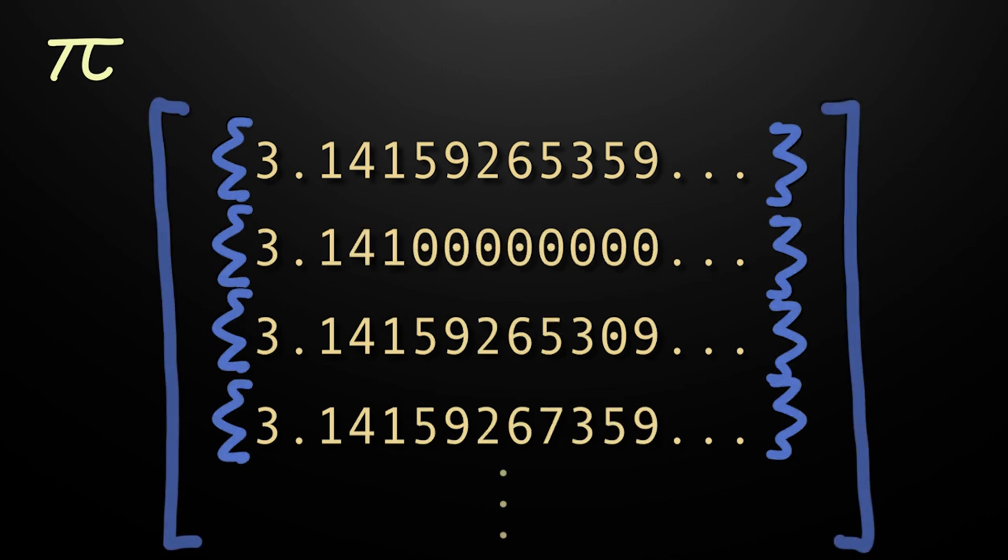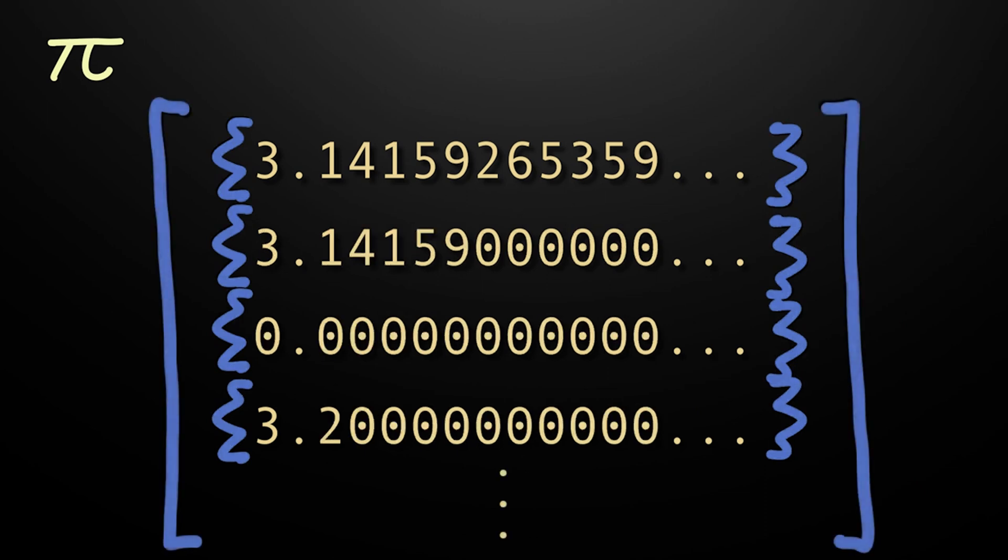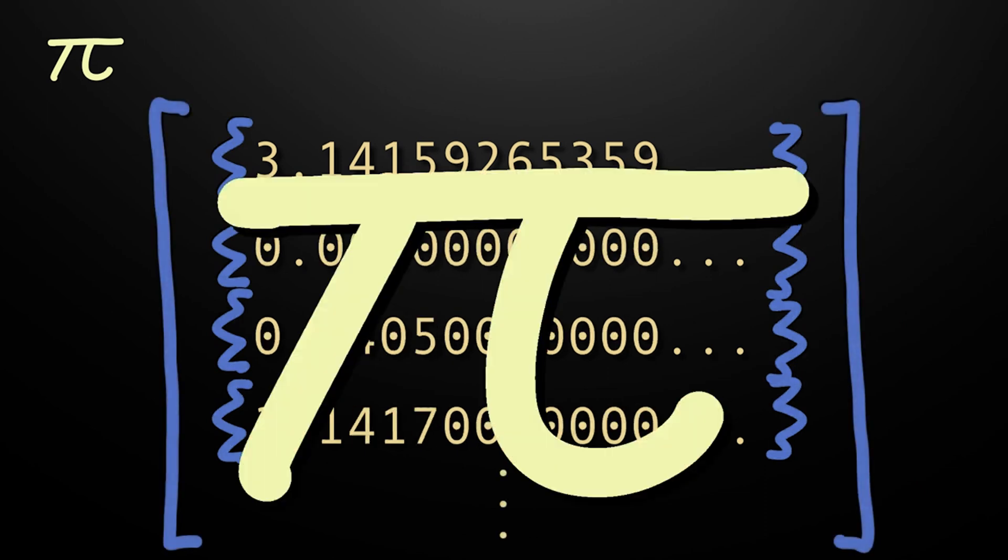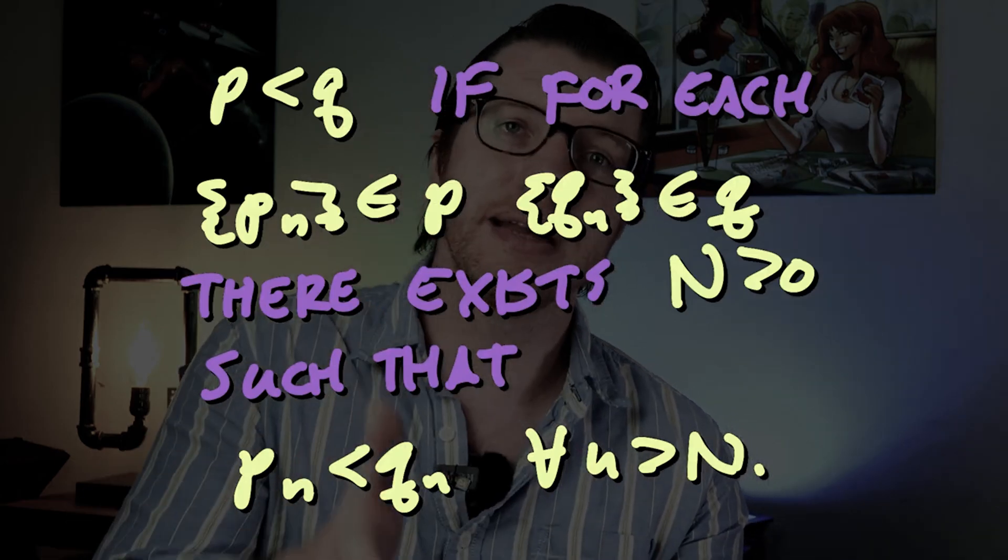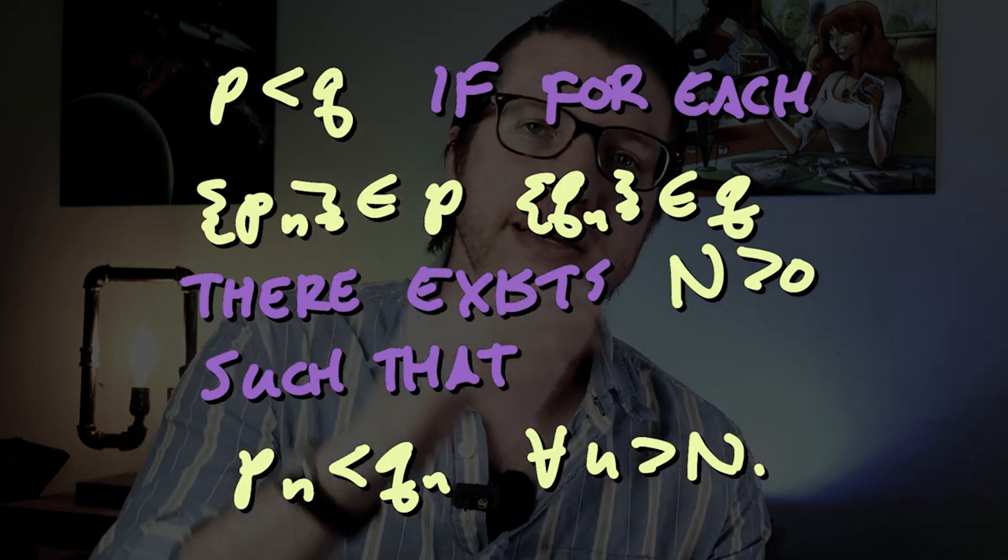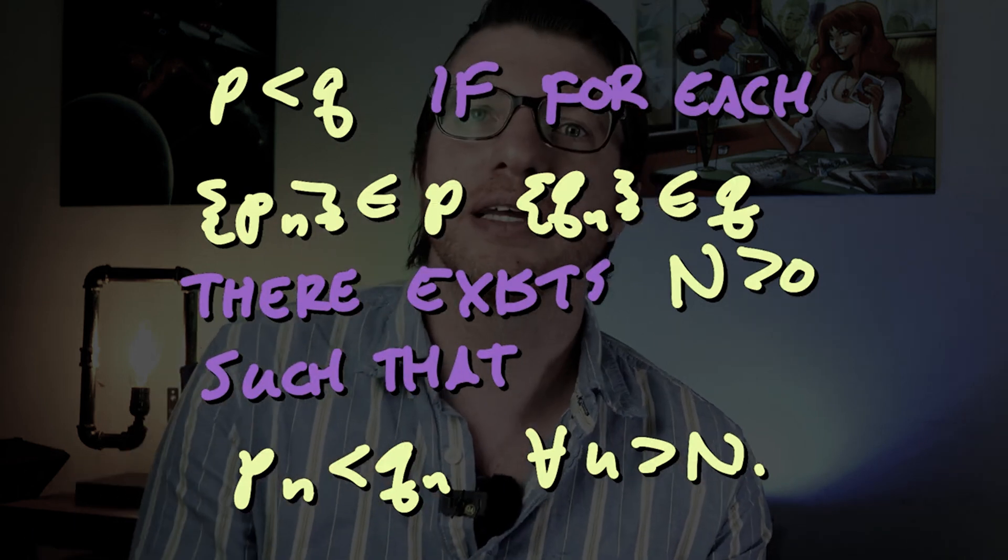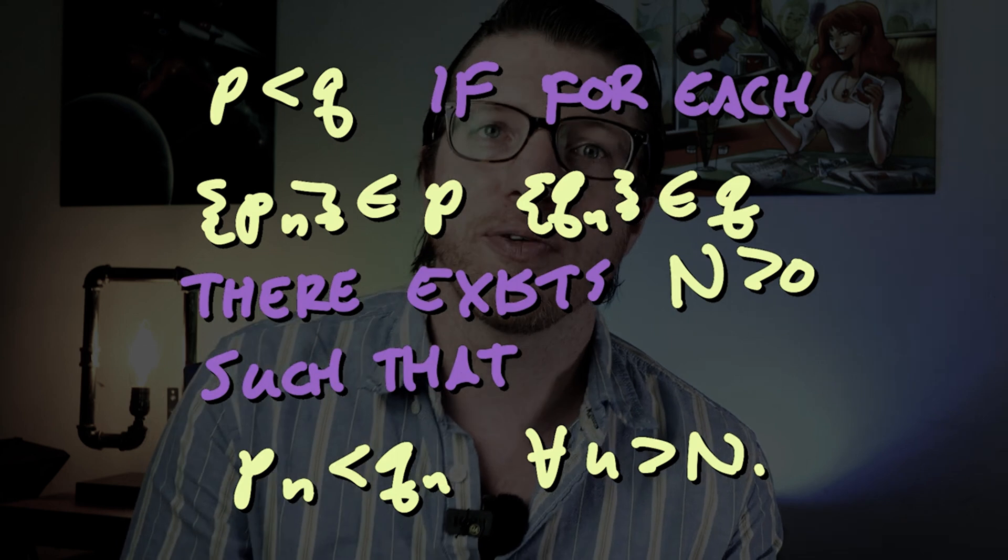What we are interested in today is a total ordering. In our last video, we gave a definition of real numbers, and we also defined what it means for one real number to be larger than another. This actually gives us not a partial ordering, but a total ordering since we can compare any two real numbers. This is a property that is inherited from the rational numbers.